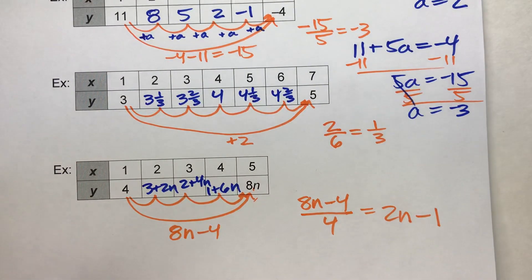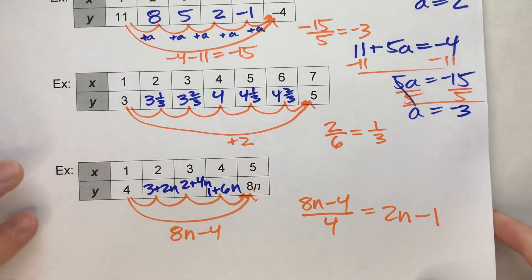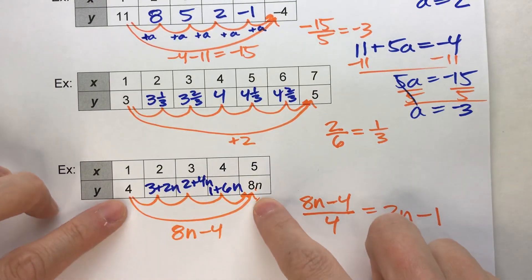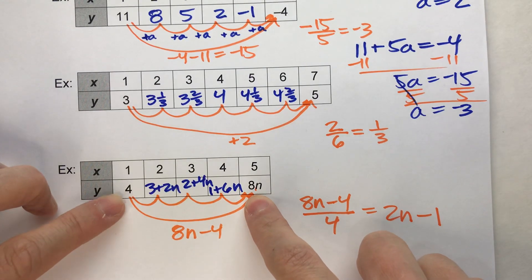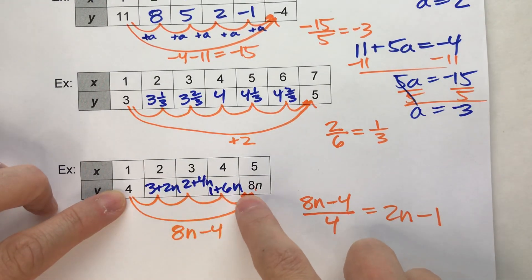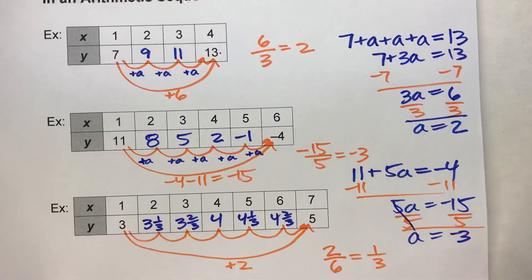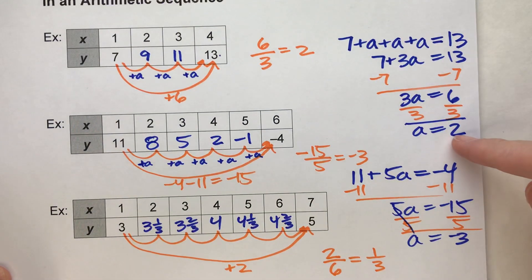So, that's how you find missing terms in arithmetic sequences. Figure out how much it changes, and then divide it by how many steps it took to make that change. Or, of course, you can also just set up an algebra equation. You can do it that way too.